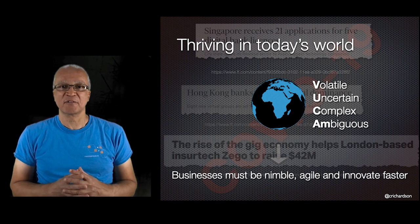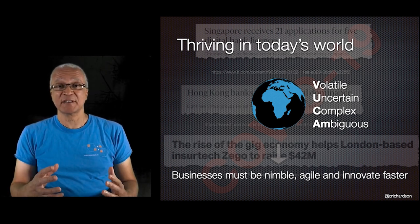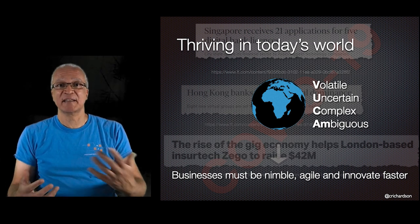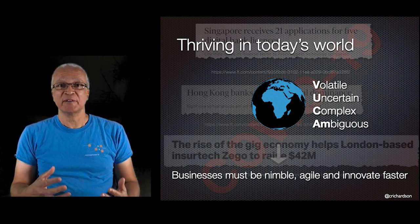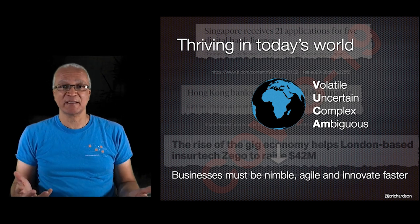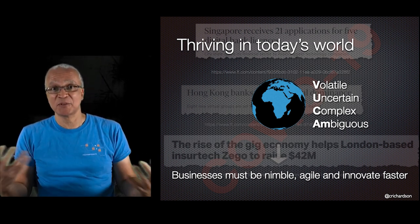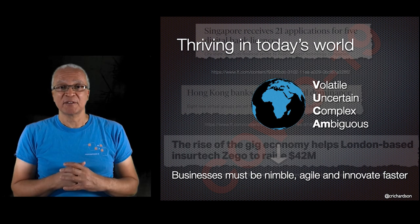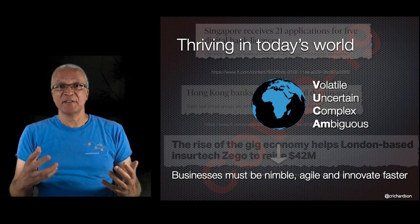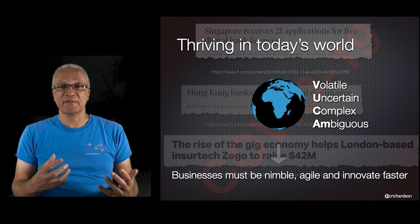These days the world is volatile, uncertain, complex, and ambiguous. Businesses must deal with unexpected new competitors, pandemics, wars, and more. In order to thrive, businesses need to be nimble, agile, and innovate faster. Modern businesses are powered by software, which means if you're responsible for a business-critical application, you're under immense pressure to deliver software rapidly, frequently, and reliably.